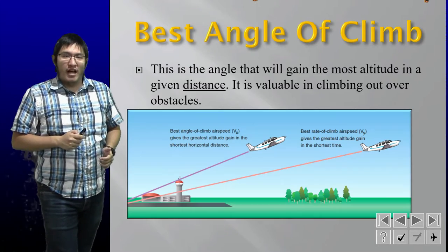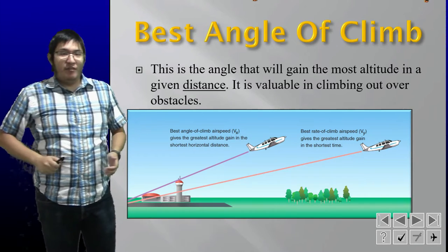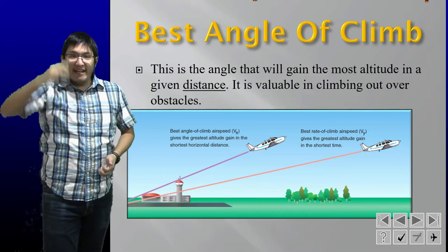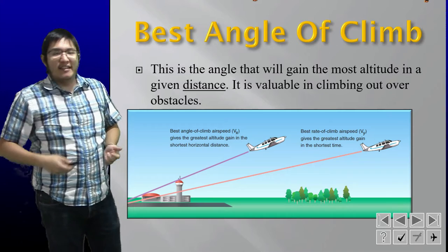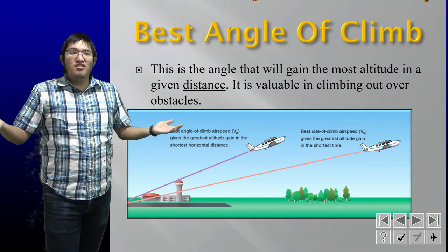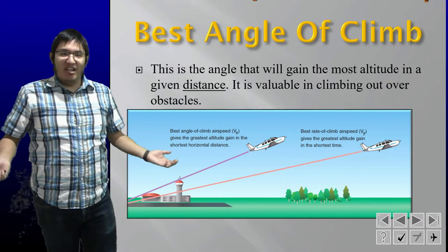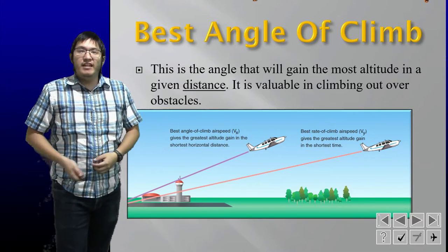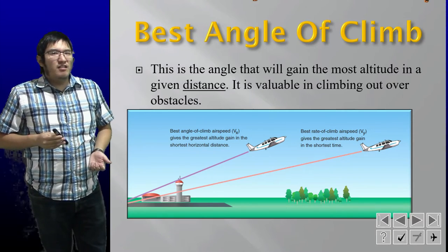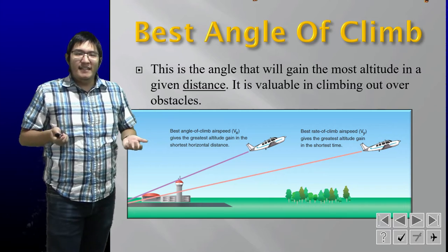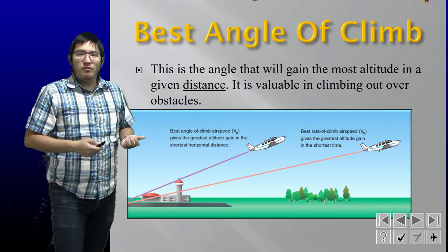Best angle of climb is the climb angle to use when you have an obstacle at the end of the runway, because it gives you the most altitude over a given distance. It's much steeper and more nose-high. Instructors often place 50-foot obstacles at the end of runways, requiring you to climb out at best angle. In a Cessna, best angle of climb is around 55 knots, which is a little slower than VY.